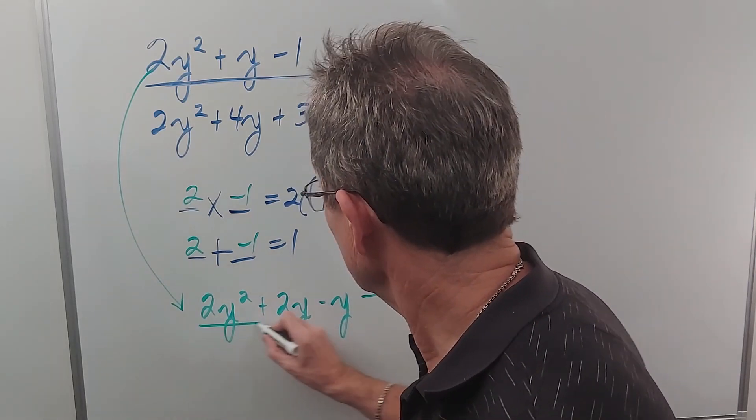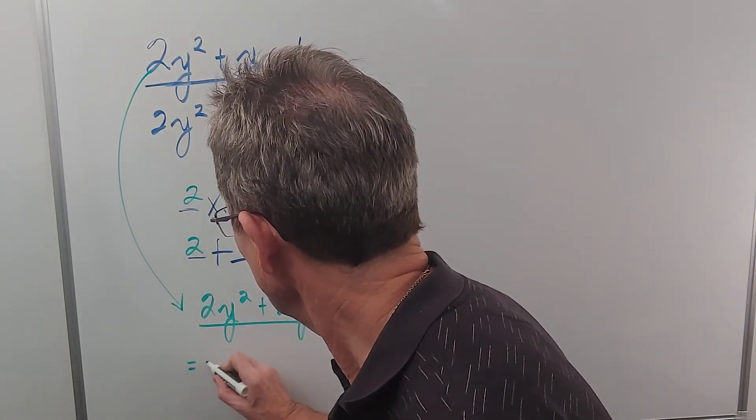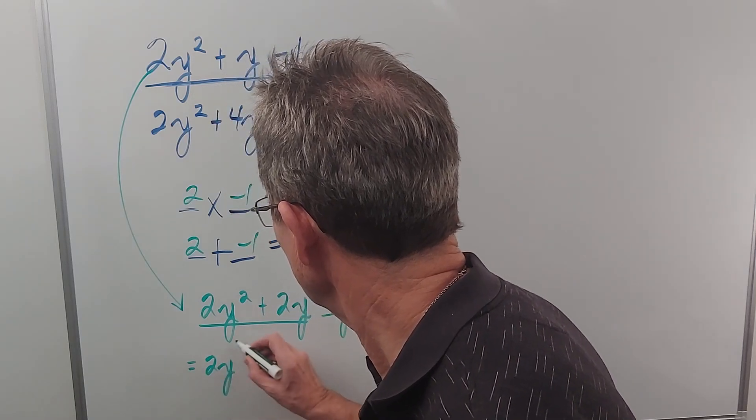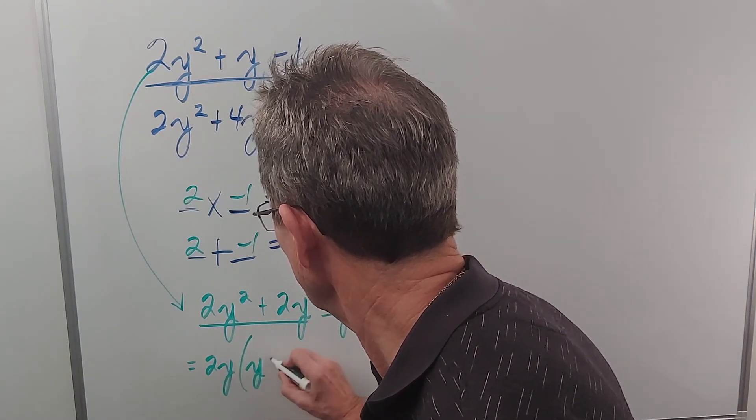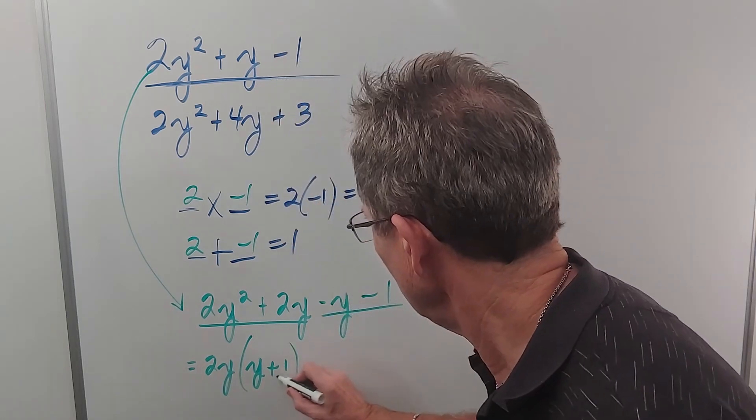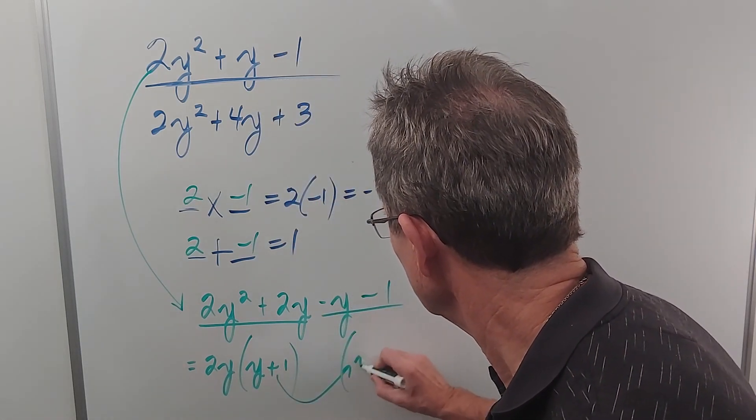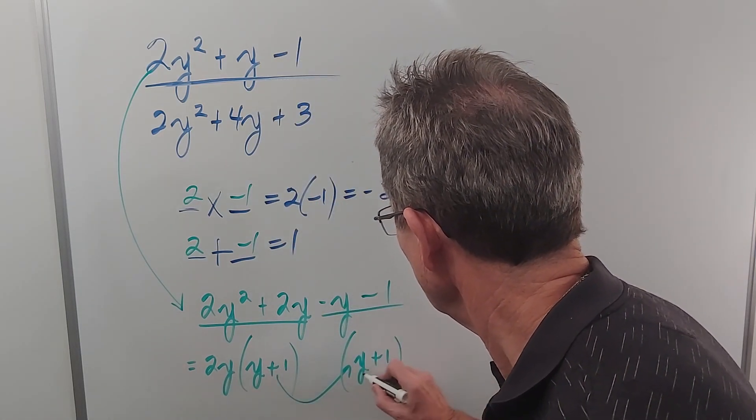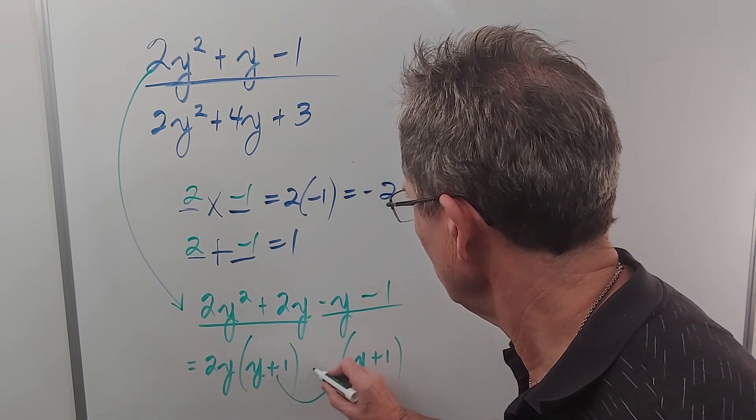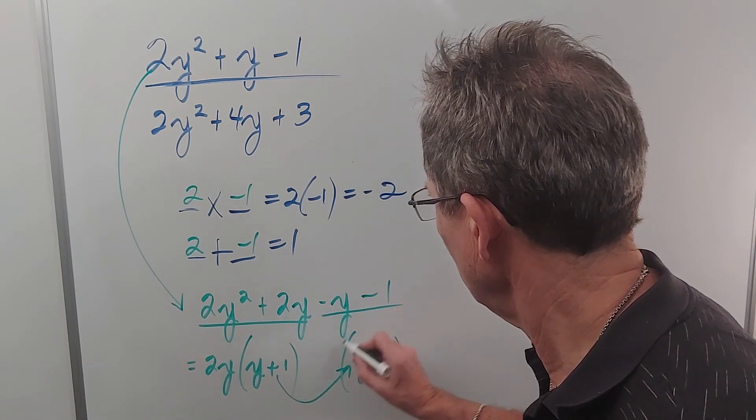Then we factor by grouping, so we group those two and those two. I can factor out 2y out of the first two, leaving me with y + 1. Then just copy this, because if it's going to work, these factors have to be the same. Then ask yourself what number has to go there to make this equal to that. That's negative 1.